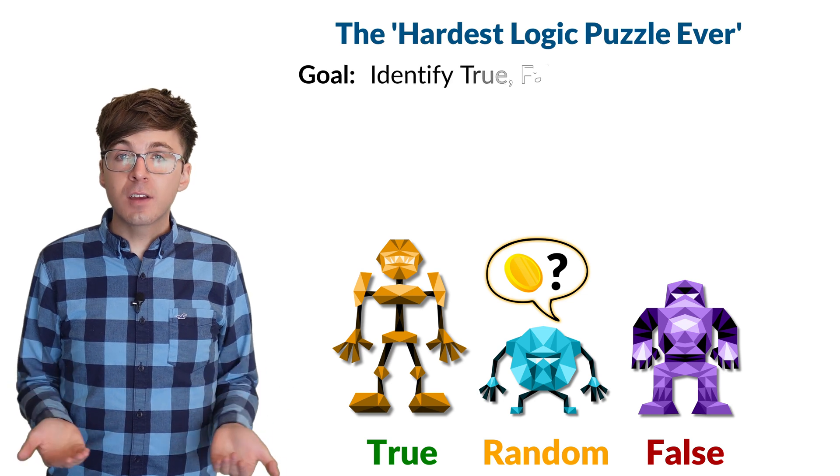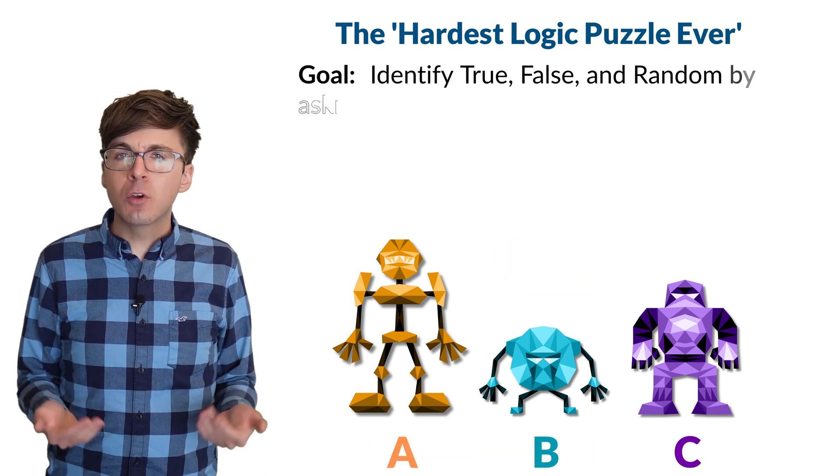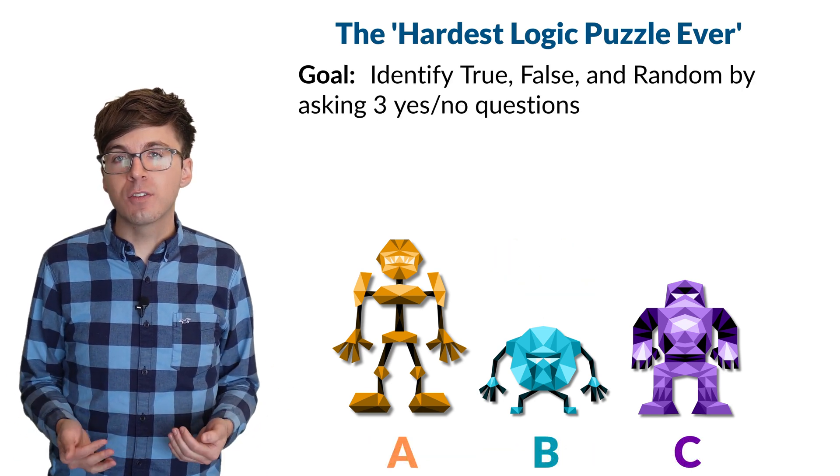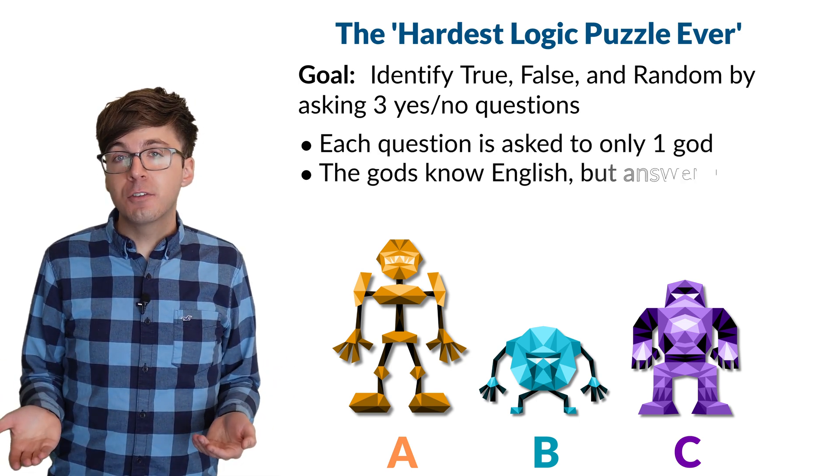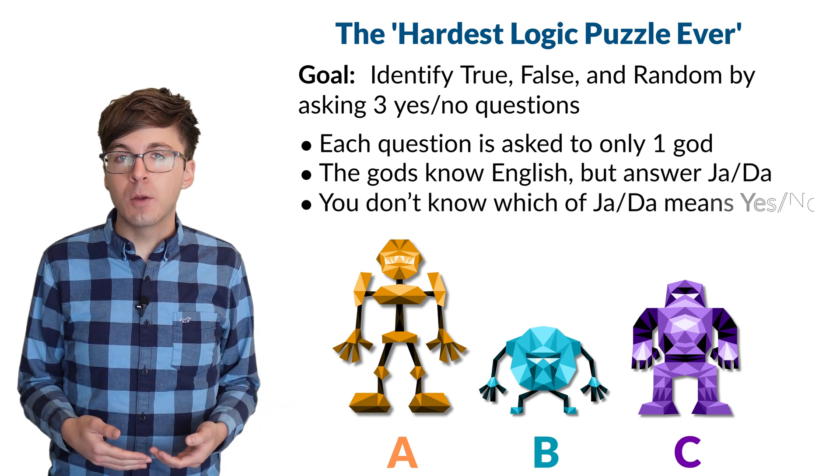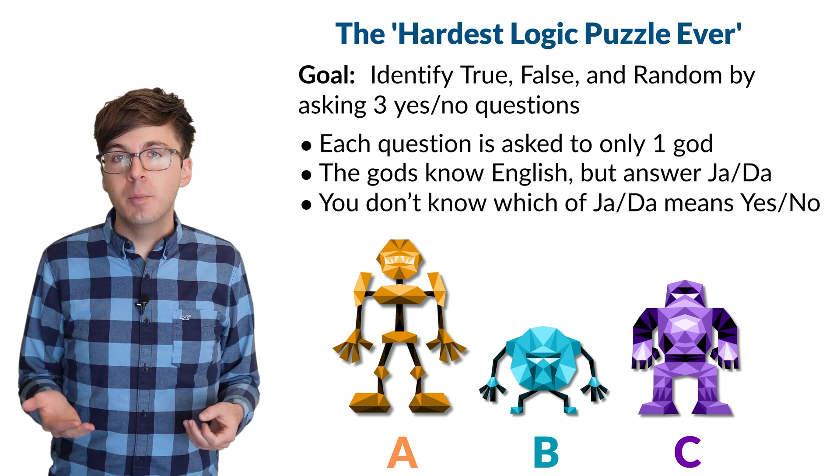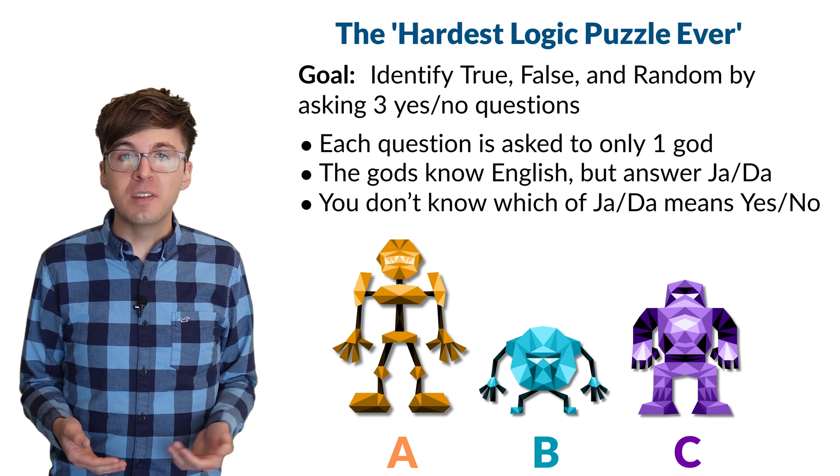Your task is to discover their identities by asking a total of three yes or no questions. Each question is asked to only one god. The gods understand English, but they answer in their own language, da or ya. But you don't know which means yes and which means no.